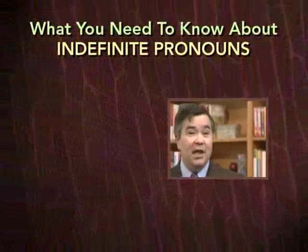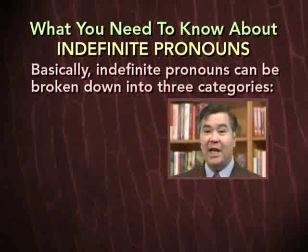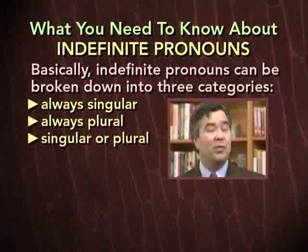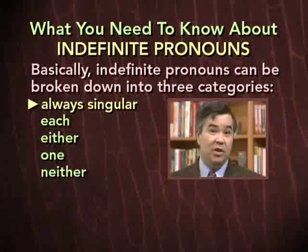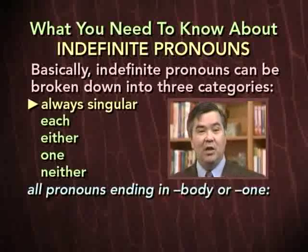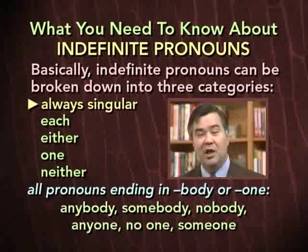And that's why indefinite pronouns can sometimes make for tricky subject-verb agreement problems. In order to use indefinite pronouns correctly and match them up with the proper singular or plural verb, you need to know a few basic rules. Basically, indefinite pronouns can be broken down into three categories. Some are always singular, some are always plural, and some may be either singular or plural, depending on the context. The following indefinite pronouns are always singular: each, either, one, neither, and all pronouns ending in -body or -one, such as anybody, somebody, nobody, anyone, no one, and someone.